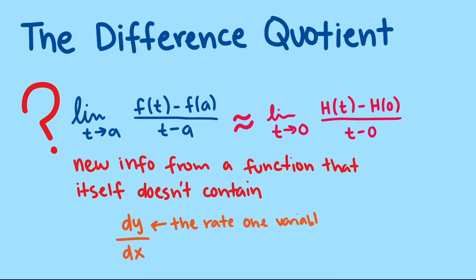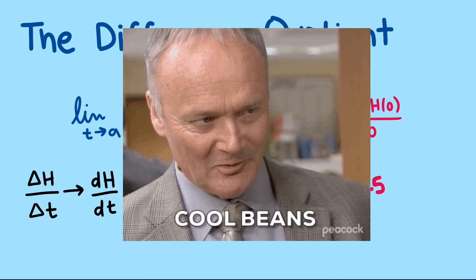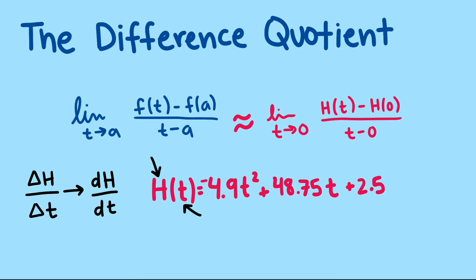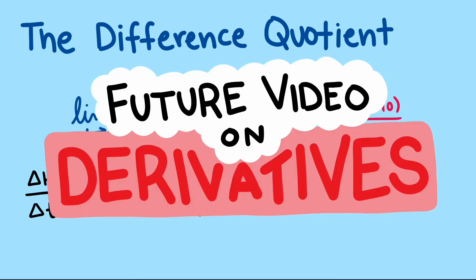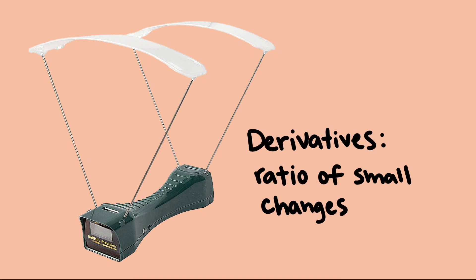We had a function that told us the height of the potato given a time, but we wanted information about the rate the height was changing given a time, or at a particular time. It is not just cool, but extremely valuable to be able to get that information from a function. We will have another video that goes deeper into the meaning of a derivative, but if you think of derivatives with the math of chronographs, that is, a ratio of small changes, you're well on your way to understanding derivatives in a way that is useful.